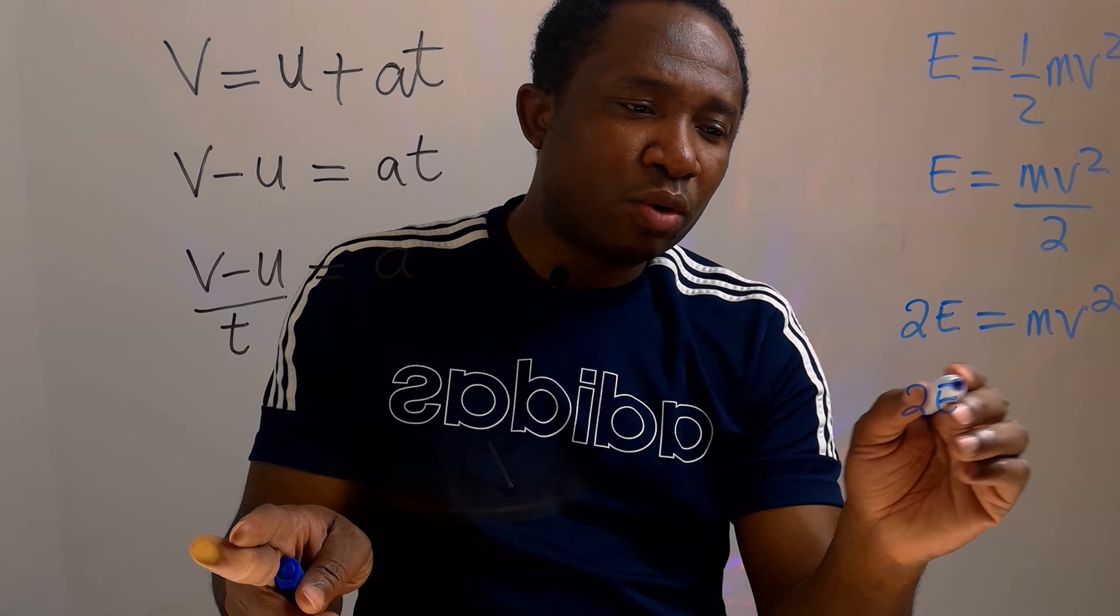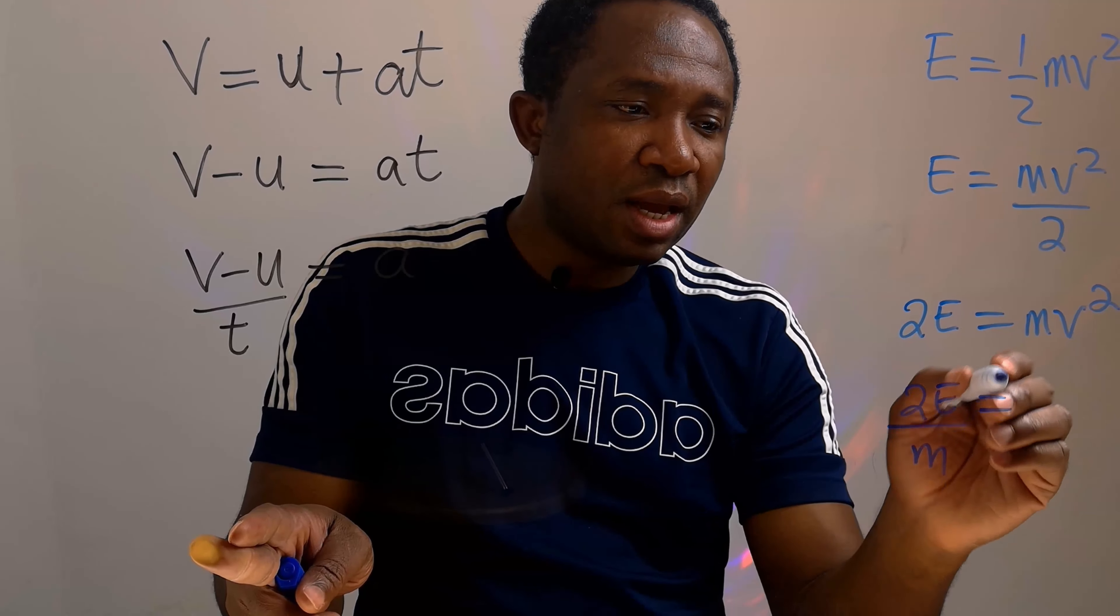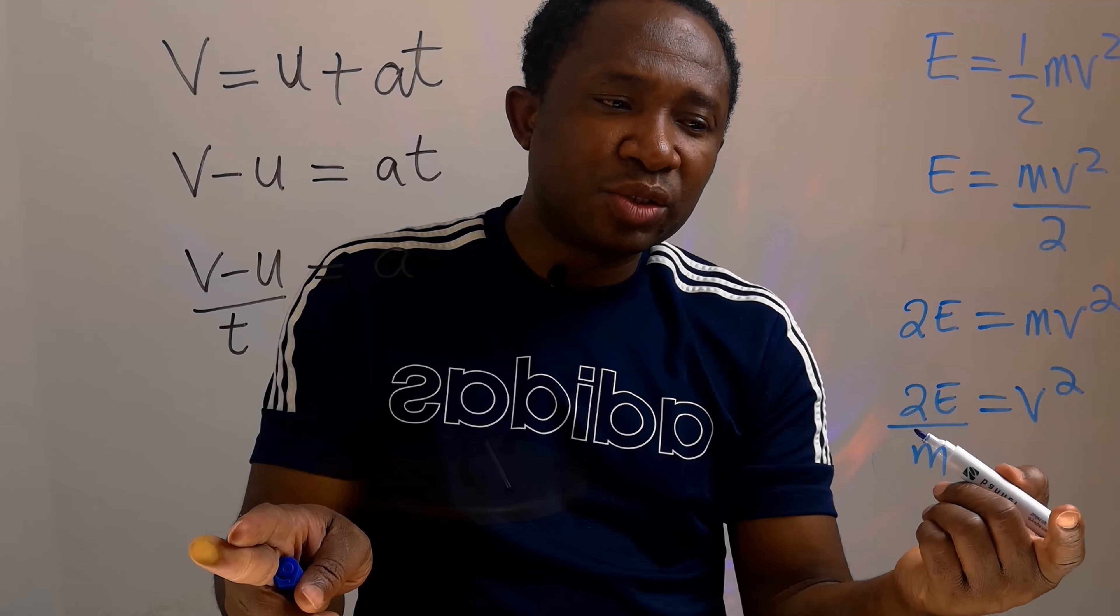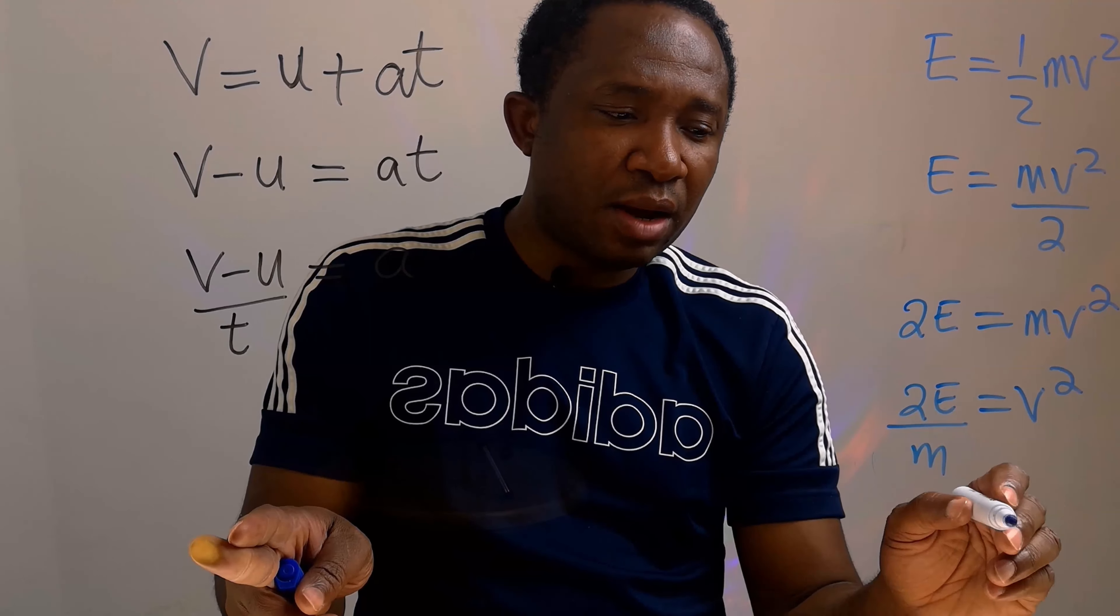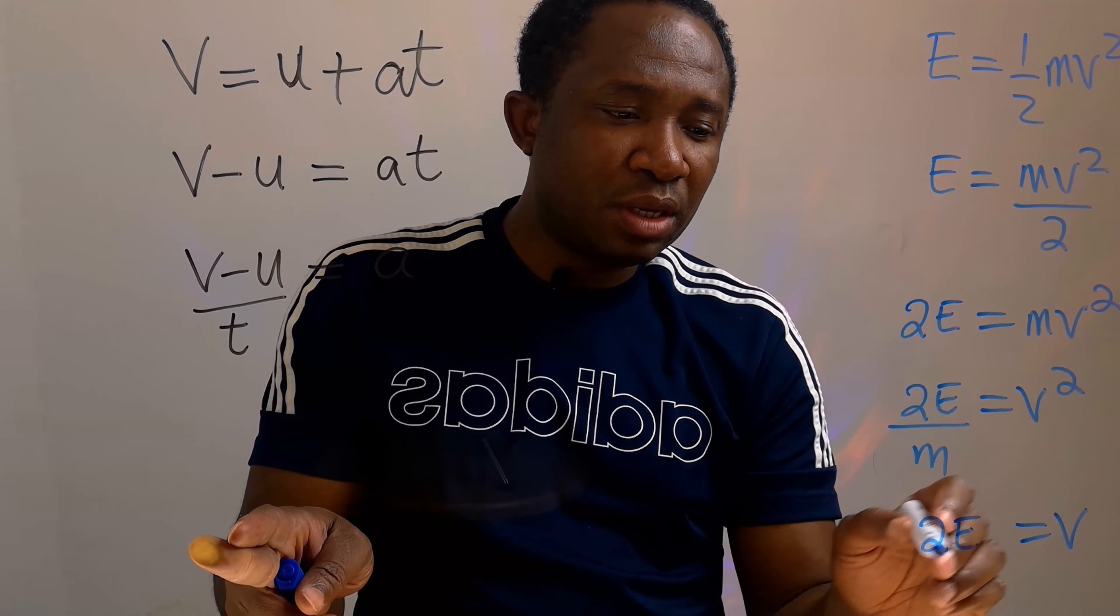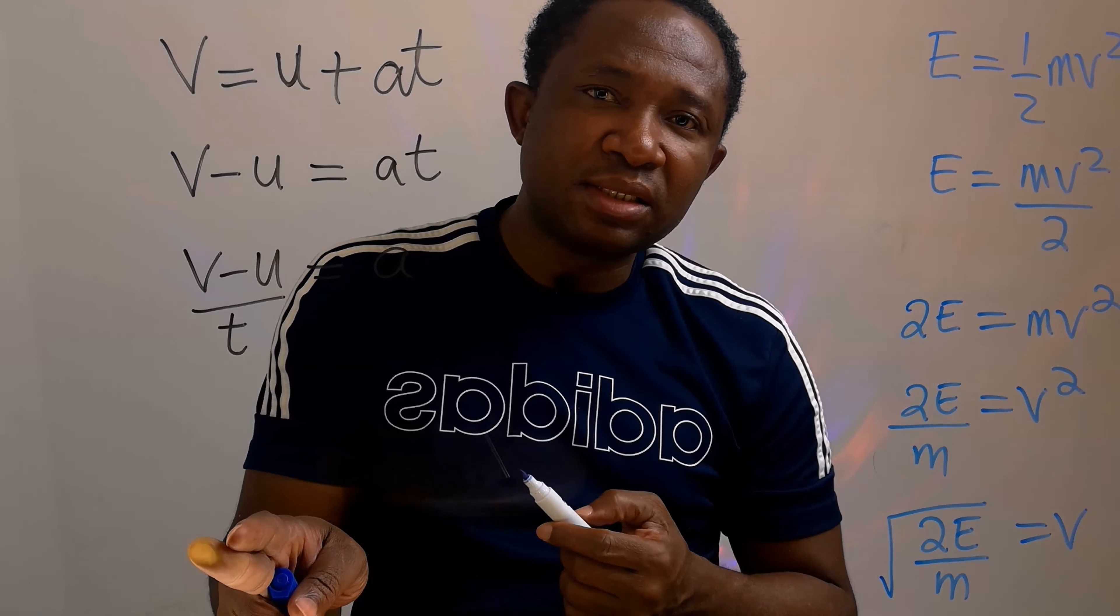Here I'm left with v squared, but I need just only v. Hence on this side I will have v. Here I will have 2E over m, and this is our answer.